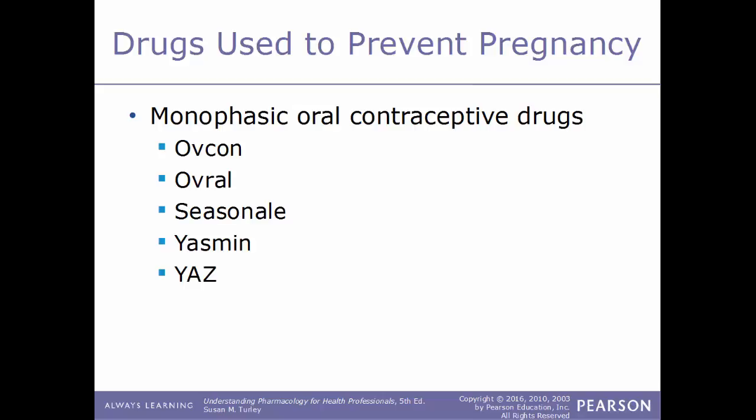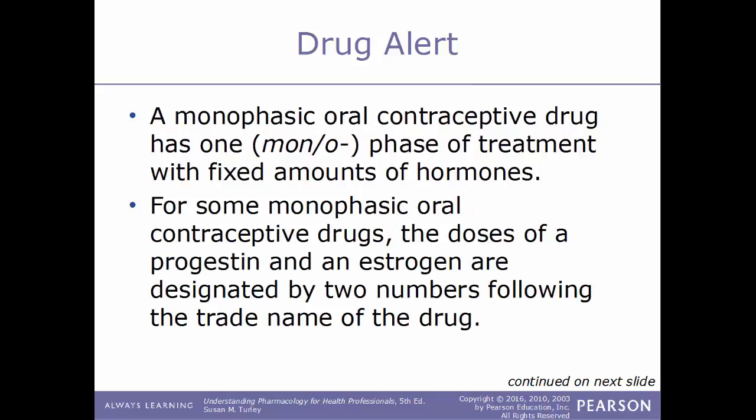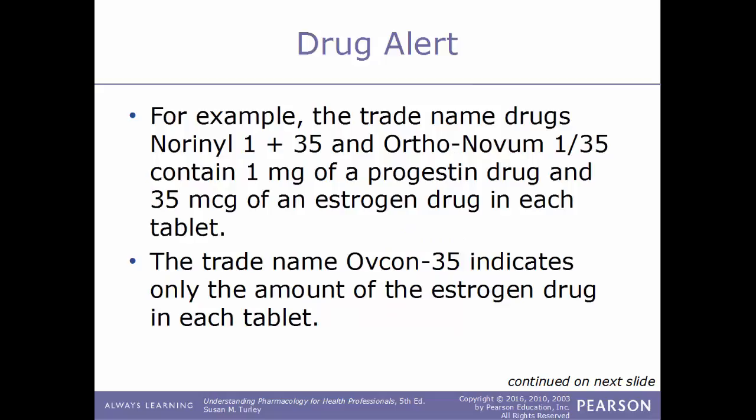There are many different trade names for oral contraceptive drugs, and some include numbers after the trade name. It is important to understand what those numbers mean. For example, the trade name drugs Norinyl 1+35 and Ortho-Novum 1/35 contain 1 milligram of a progestin drug and 35 micrograms of an estrogen drug in each tablet. The trade name Ovcon 35 indicates only the amount of estrogen — 35 micrograms — in each tablet.